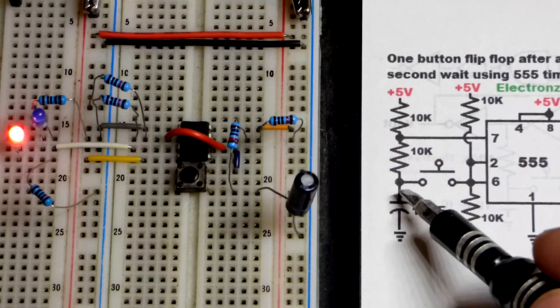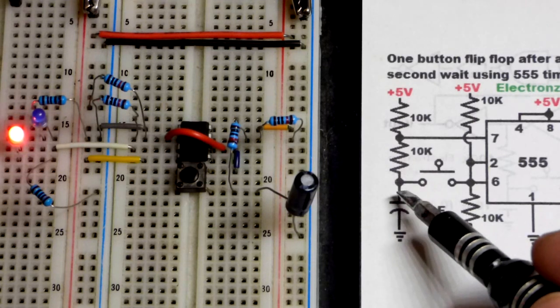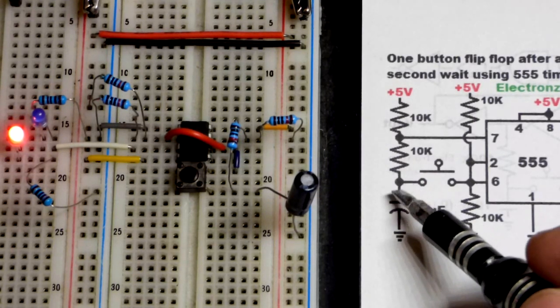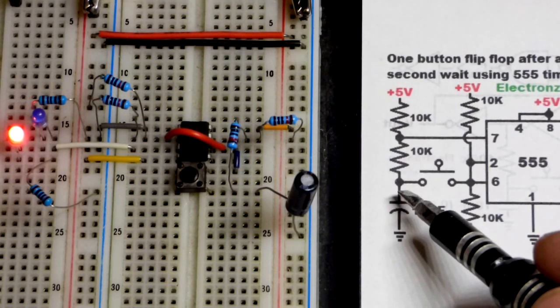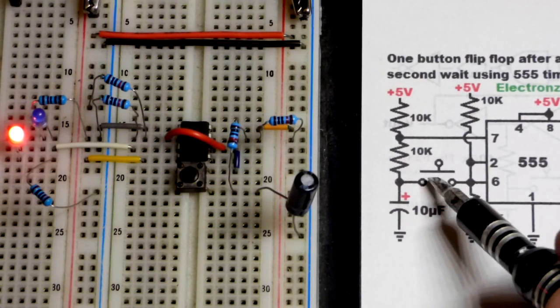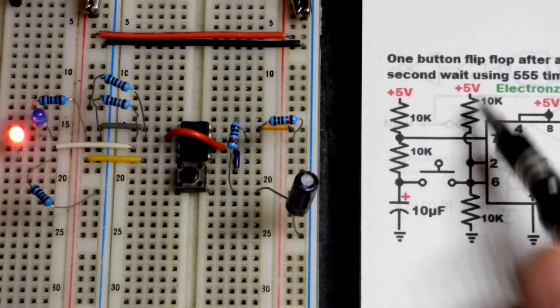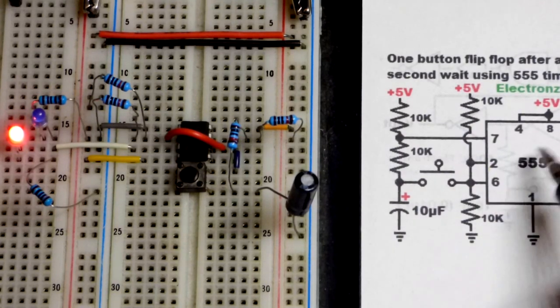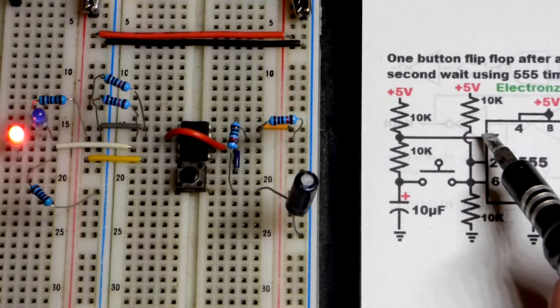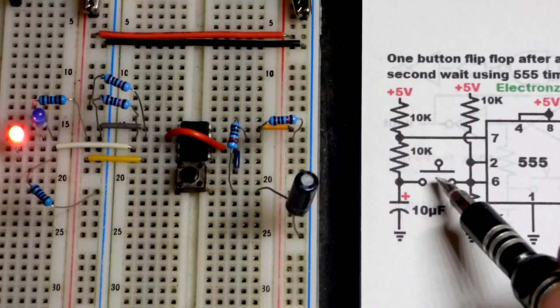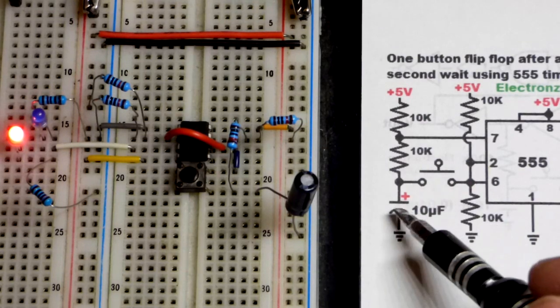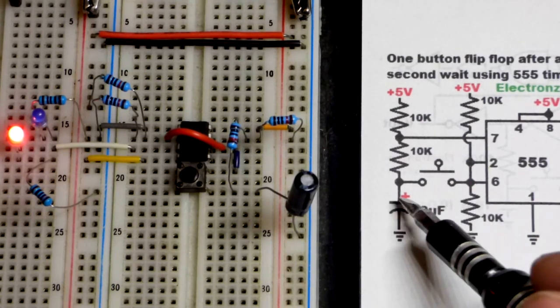When we close the switch, as you saw before when it was up at five volts - it should have been five volts even though it looked a little low - we close the switch. Now pin six will see five volts, which is above two-thirds of supply voltage, so it sets the output low. When the output goes low, so does pin seven. It connects to ground right there.